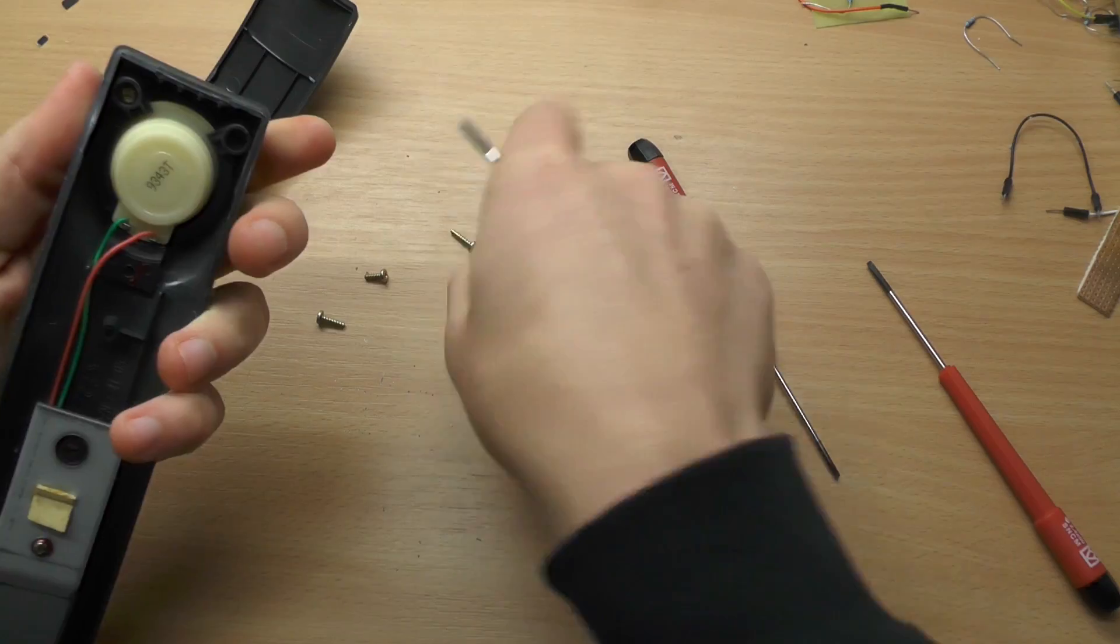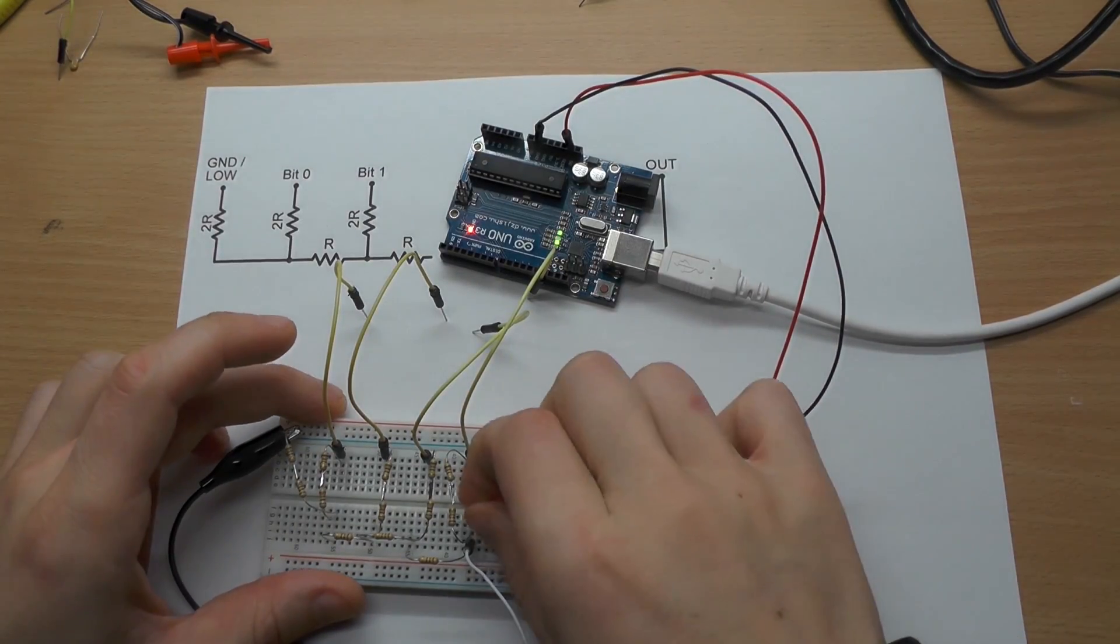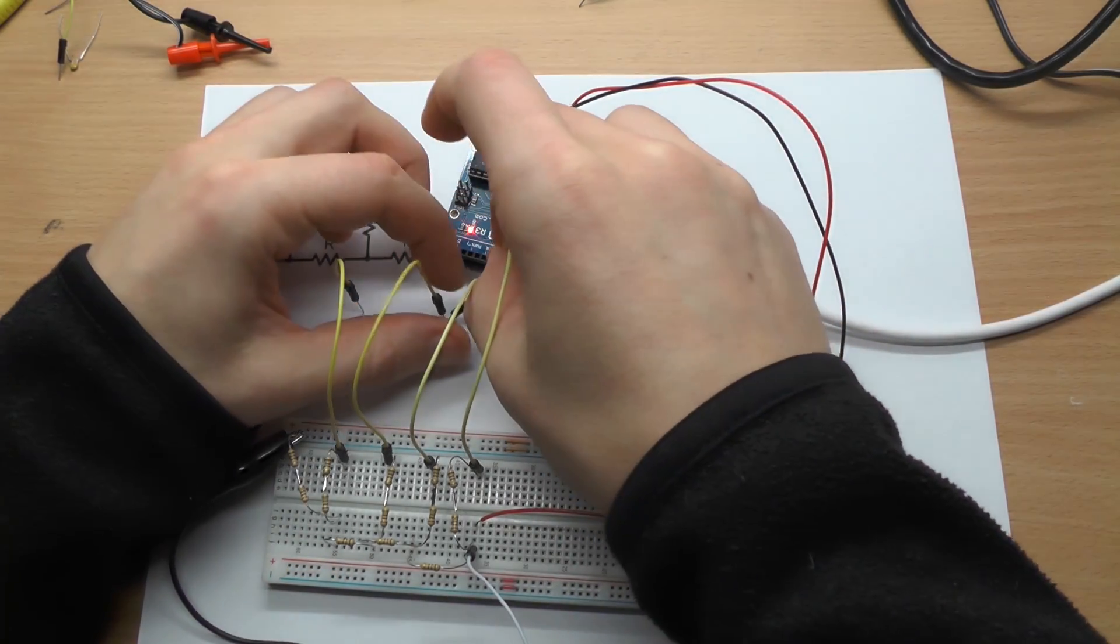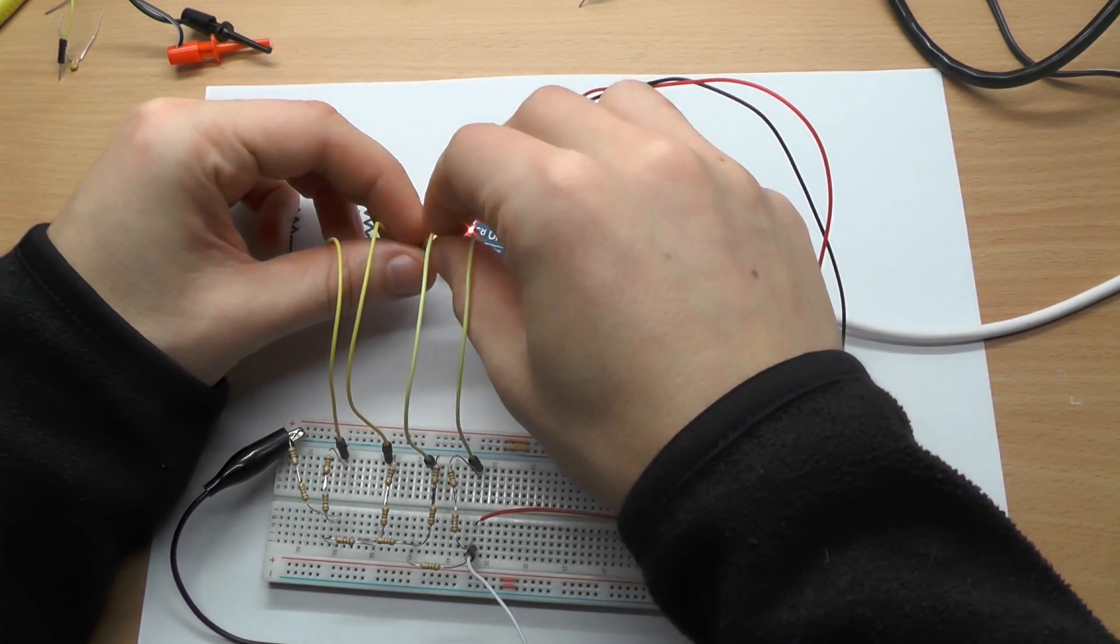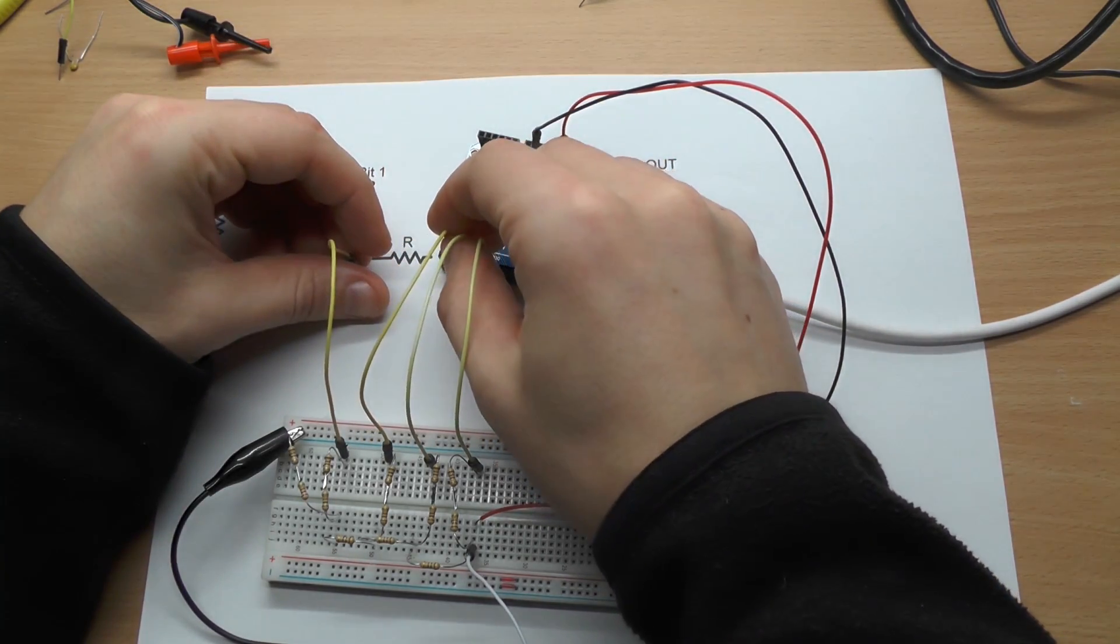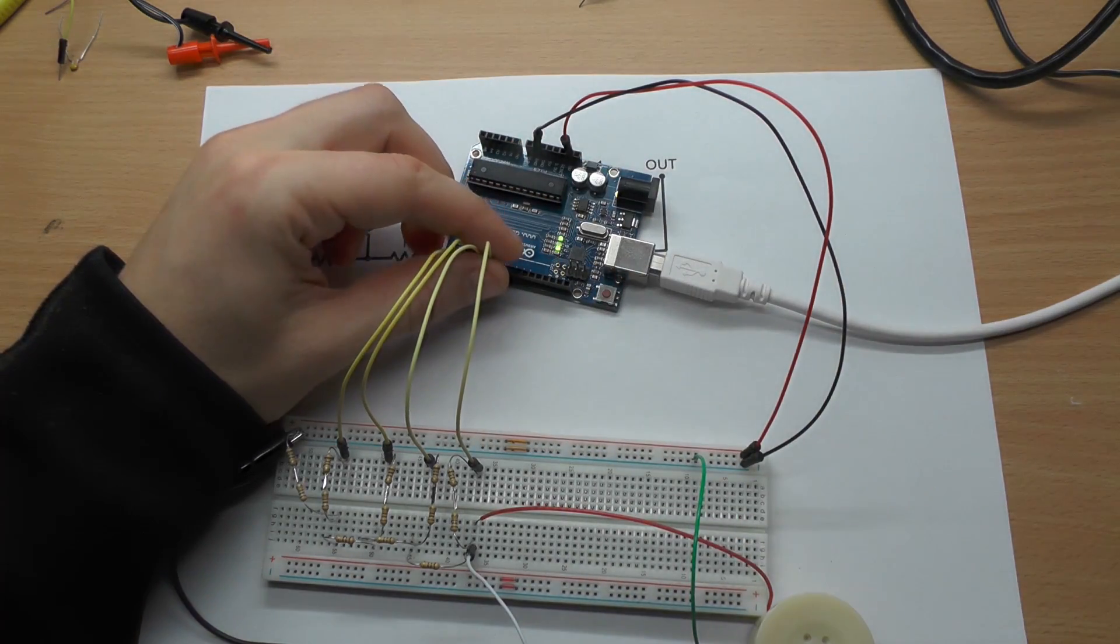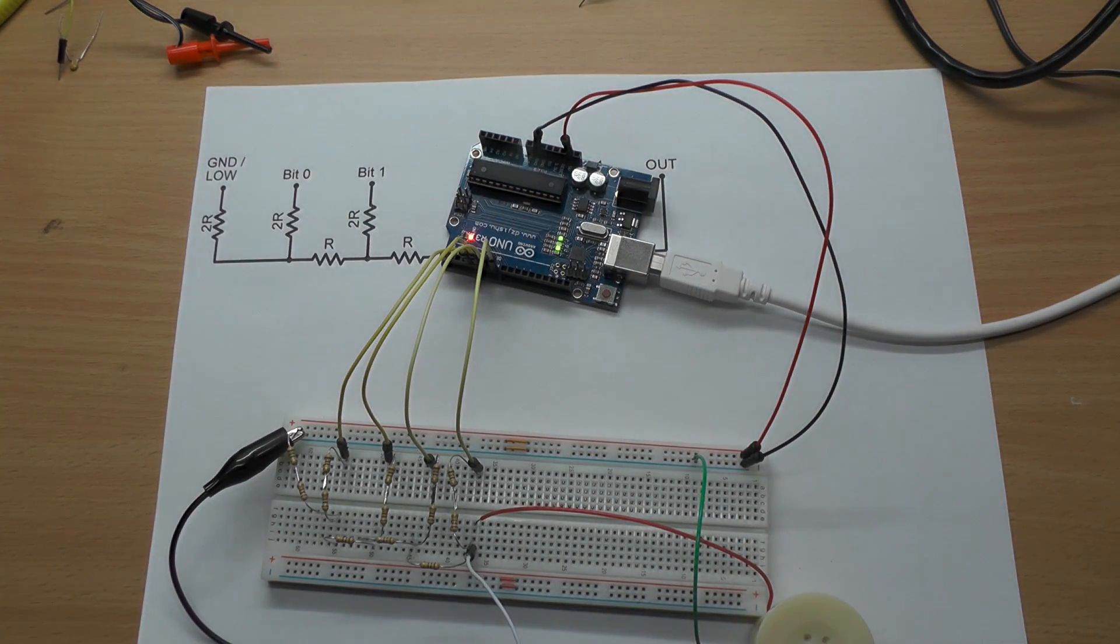So let's connect the speaker that I got from an old chunky telephone. Since we are still working on our 4-bit resistor ladder we just connect it to the higher significant bits. You could hear like the sound got smoother and smoother when you connected the lower significant bits.